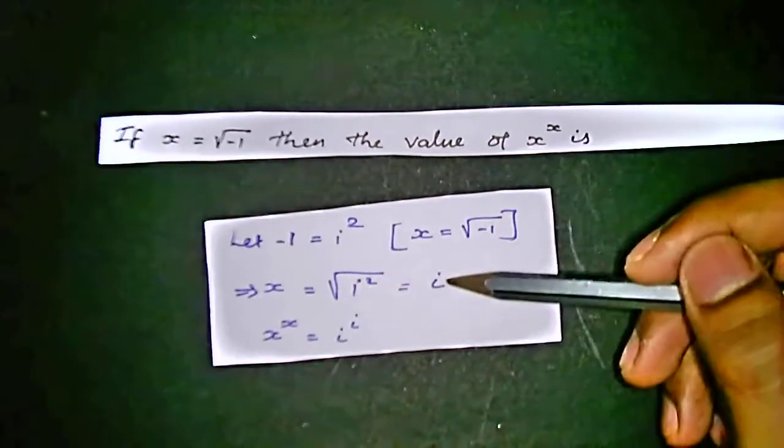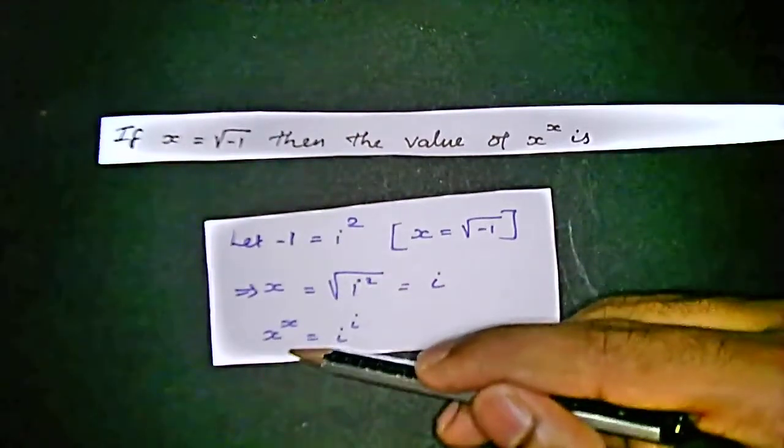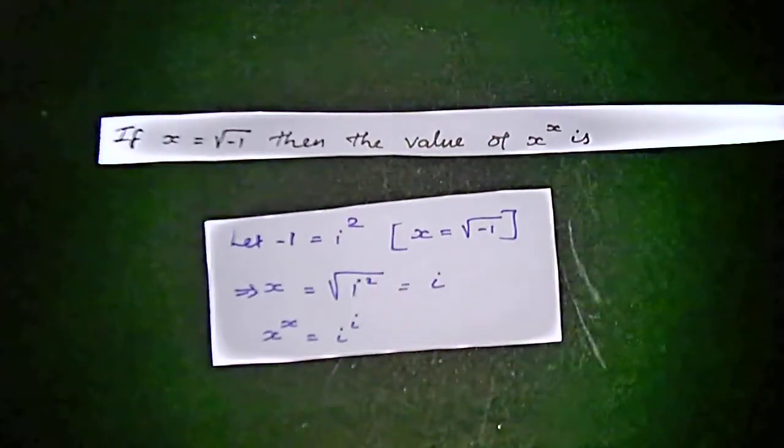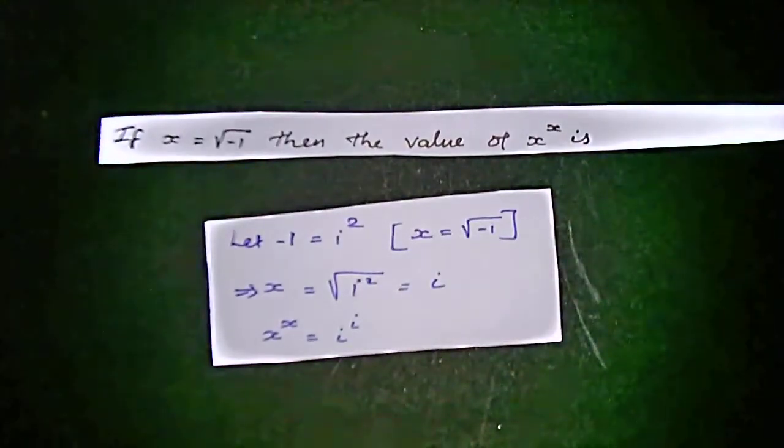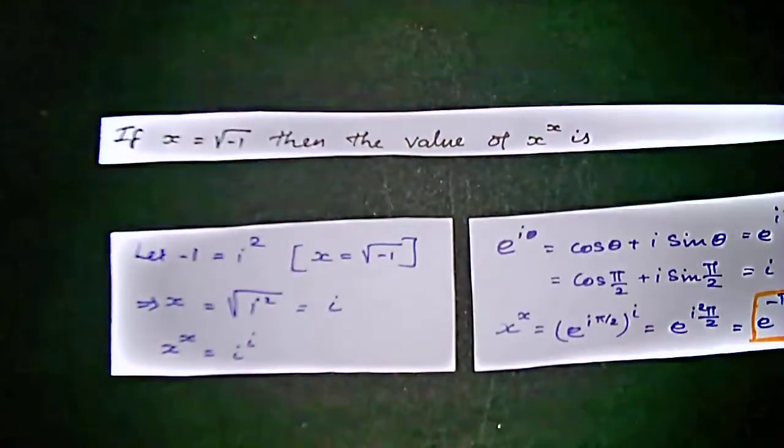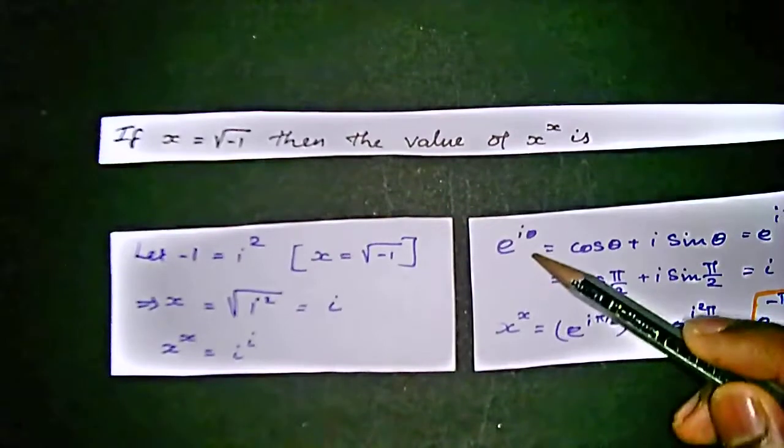So now we can say that x power x equals i power i. But we can't say that i power i is our result because it doesn't have a standardized formula. So we have to apply what will give us i.